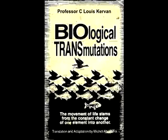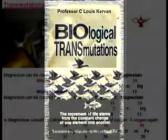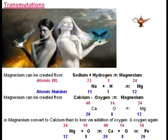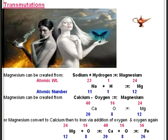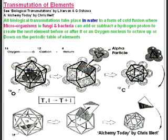An example of this is where hydrogen is added to sodium, giving us magnesium as a result. Or if oxygen is subtracted from calcium we get magnesium. If magnesium has oxygen added to it we get calcium, and then calcium with oxygen added gives us iron.